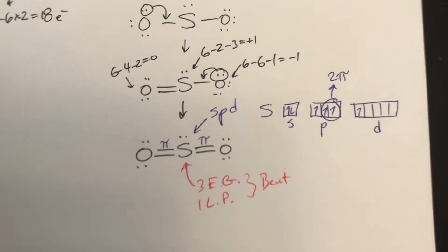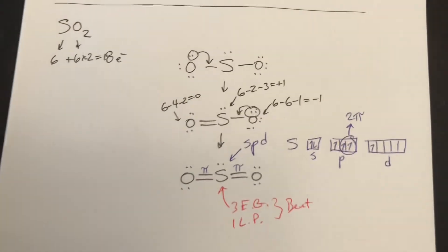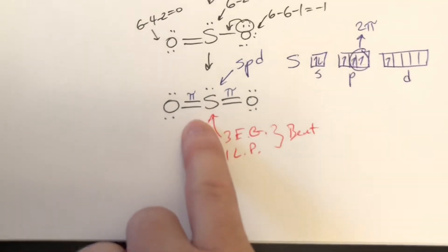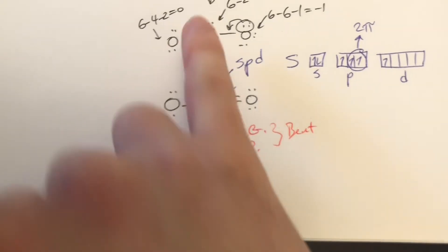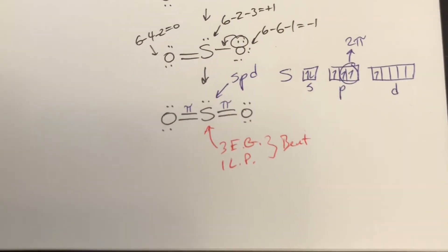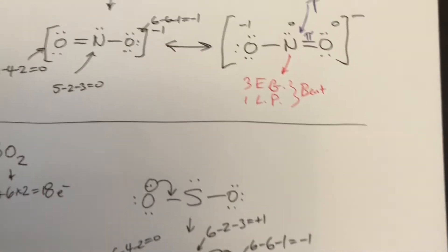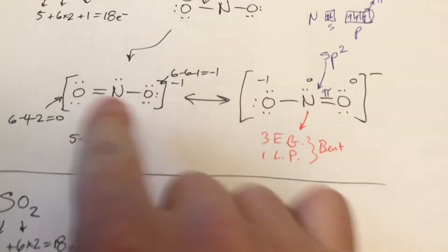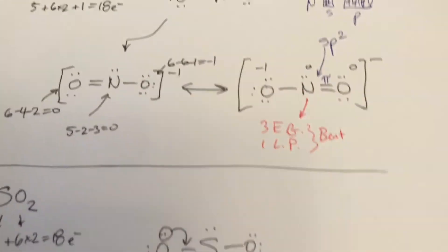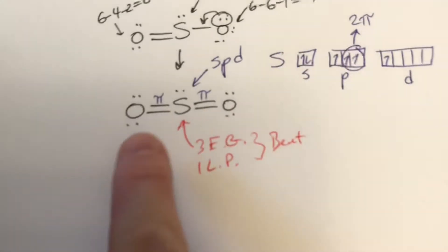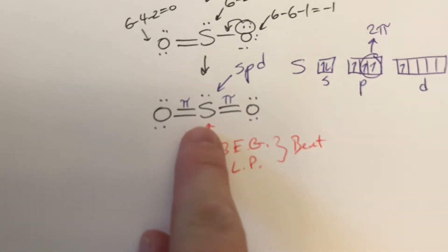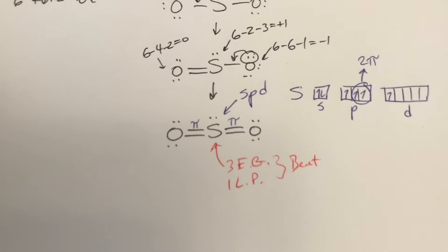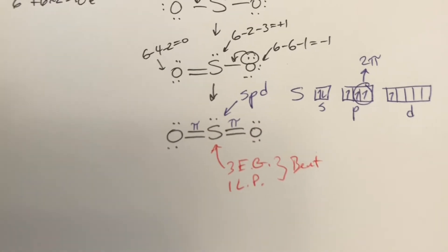There are no resonance structures for SO₂ because it doesn't need them. To stabilize NO₂⁻ we needed multiple structures to spread those charges around, but here everything is zero — it's a happy molecule — so there's no need for resonance structures.